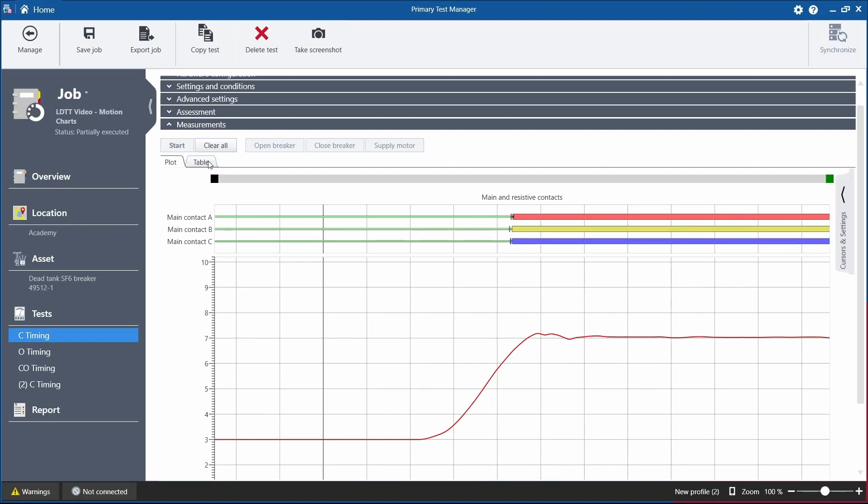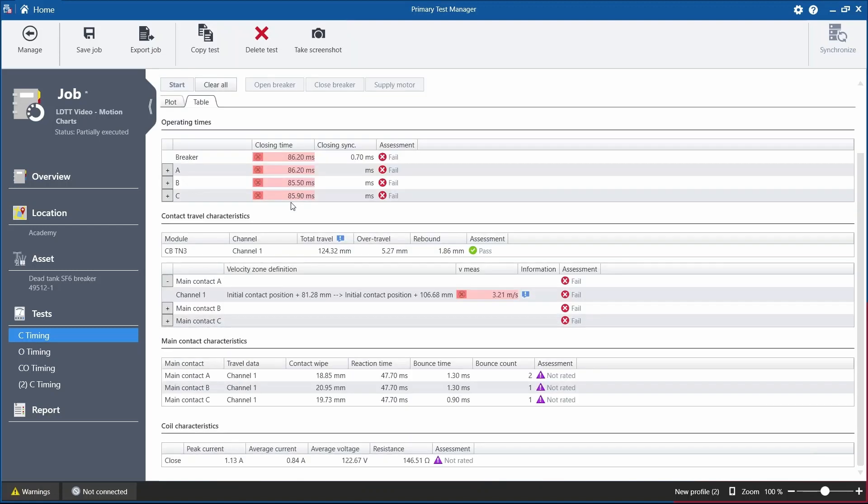If we move over to the table now, we have some characteristics of our measurement, like the closing time, how well each phase was synced together, some contact travel characteristics like total travel, over travel, and rebound, and the main contact characteristics: contact wipe, reaction time, and bounce time.